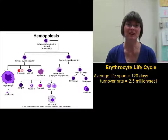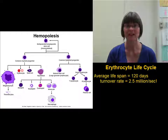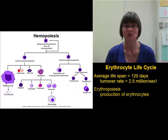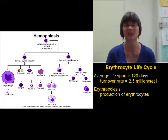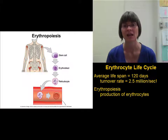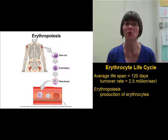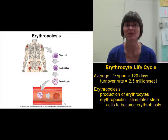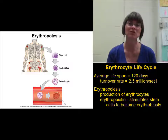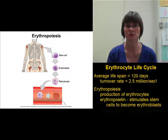When we're looking specifically at the pathway that leads to the production of erythrocytes, that's called erythropoiesis. Hematopoiesis refers to producing any of the formed elements of the blood, and erythropoiesis is the pathway that leads specifically to the red blood cells. Erythropoiesis depends on the hormone erythropoietin.